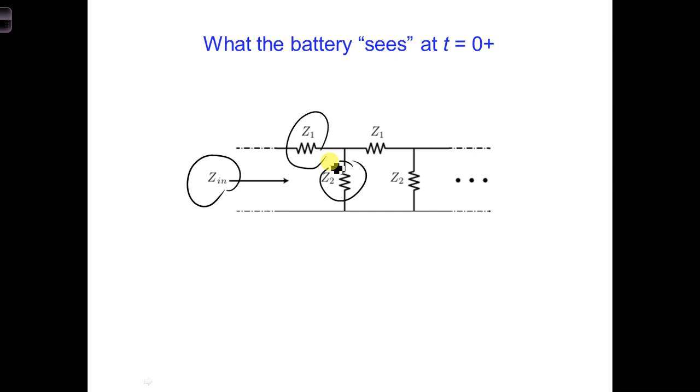We'll assume the transmission line is homogeneous, which means that z2 is in parallel with z in, meaning that we can write z1, z2 here. Here, if we're looking in, we get the input impedance. And what's beyond here, we have more transmission lines, which is equal to z in, because it's homogeneous.